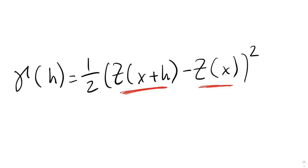z of x plus h is the elevation at this sample point. So, the right side of the equation expresses the difference between the elevations of two points which are separated by h. The square comes from the definition of the variance, which you can see in the handout. We see h again in the left side of the equation, and the gamma of h is the variogram function.